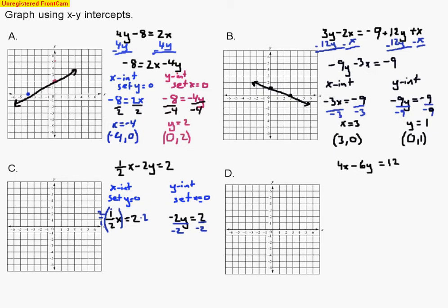That gives x equals 4. When y was 0, x is 4, so the ordered pair is (4, 0). Dividing by negative 2 on the other side leaves y equals negative 1. When x was 0, y is negative 1, so the ordered pair is (0, negative 1). Those are our two points: over 4 up 0 is the x-intercept where it crosses the x-axis, and over 0 down 1 is the y-intercept where it crosses the y-axis. Then we draw the line between those points.